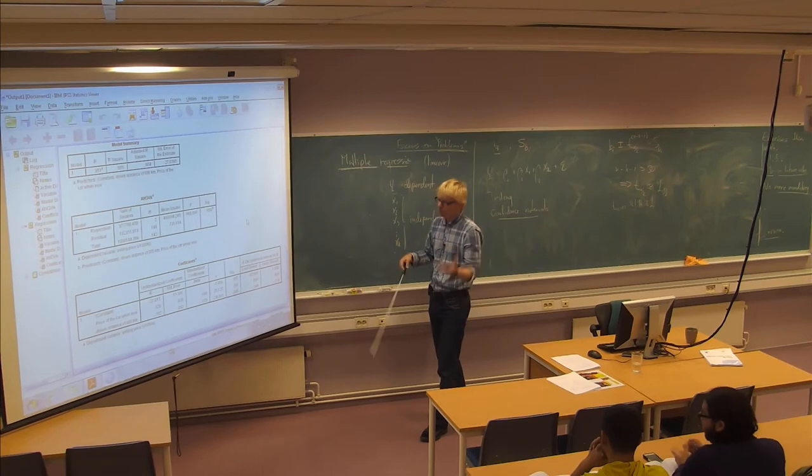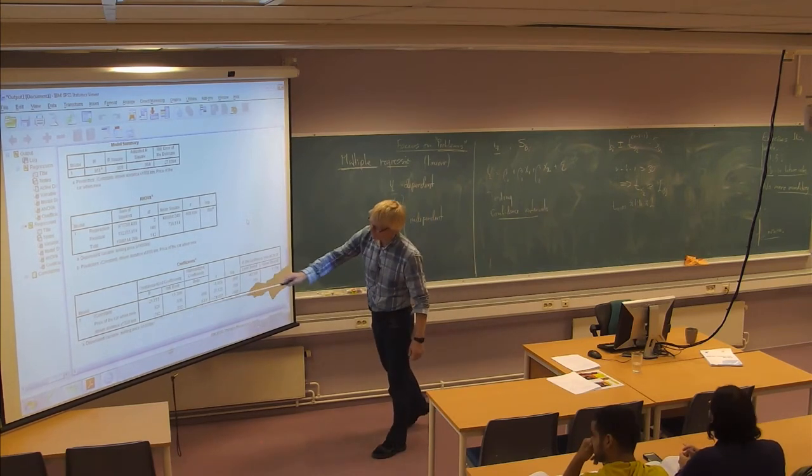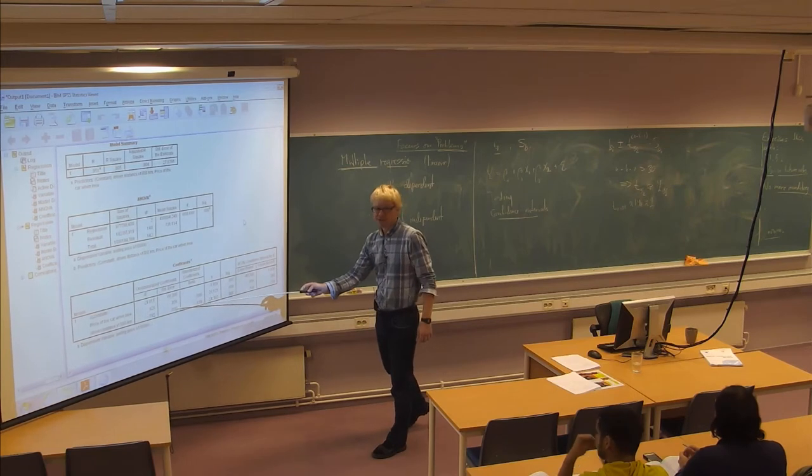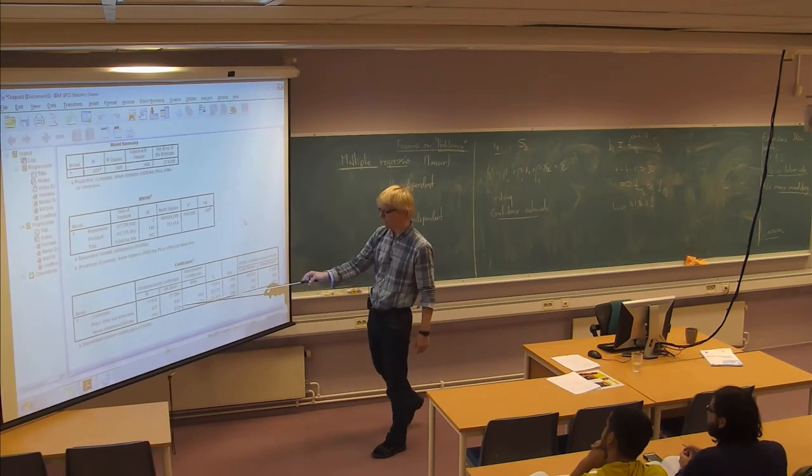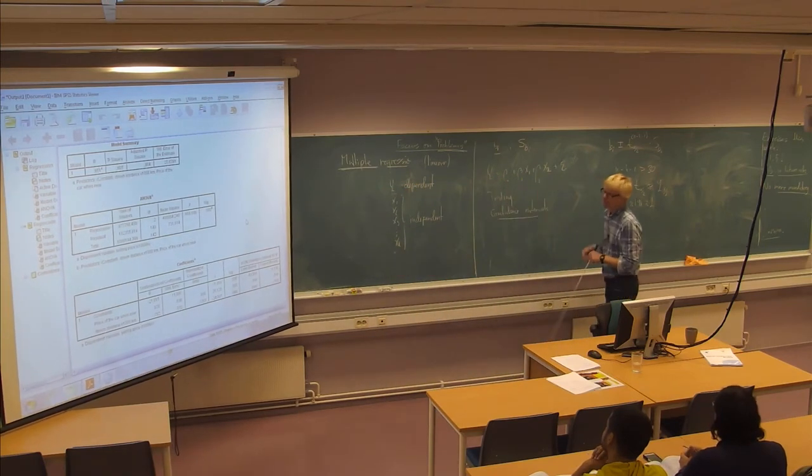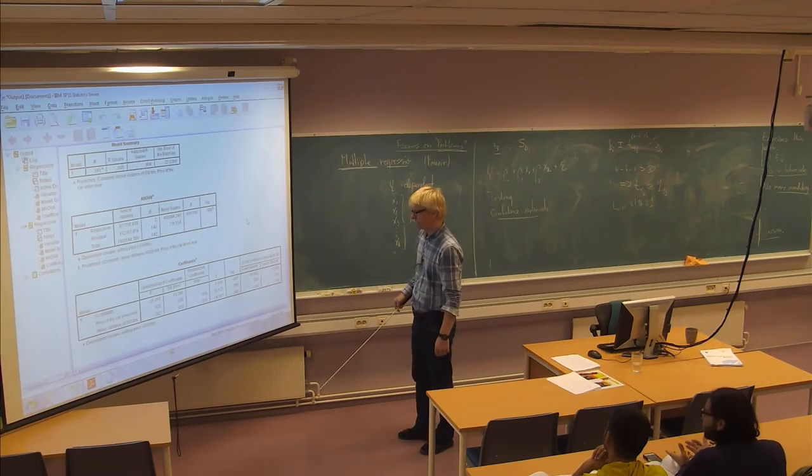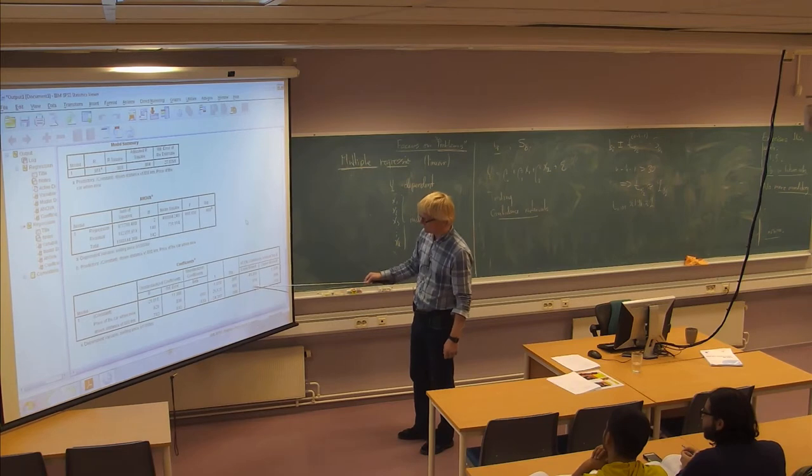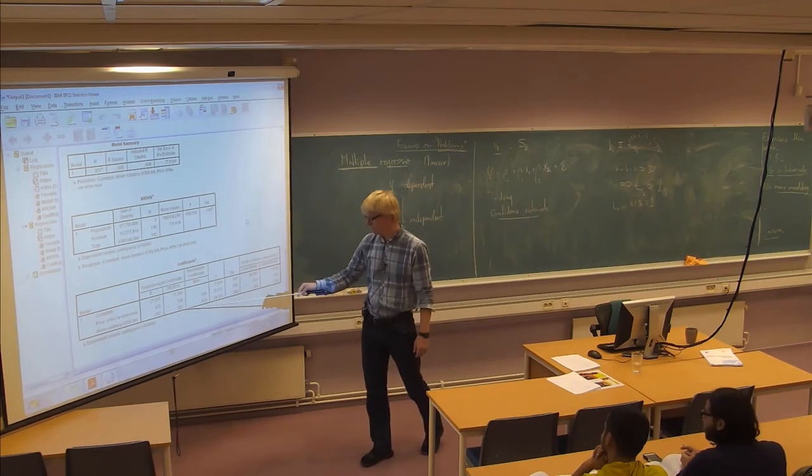So usually when people report regression output, they very often just give the coefficients and then the standard deviations here and then people will know that if I take this plus minus two times this, I have the 95% confidence interval. Yeah, so you can figure out that this is more or less equal to that one plus two times this one.